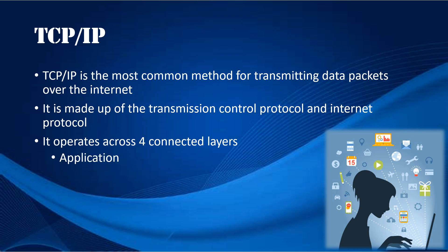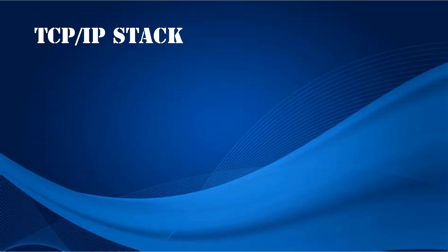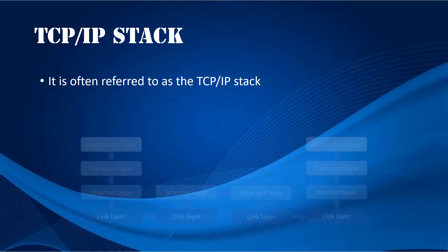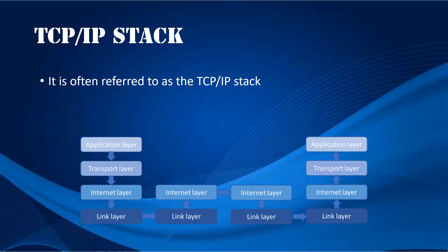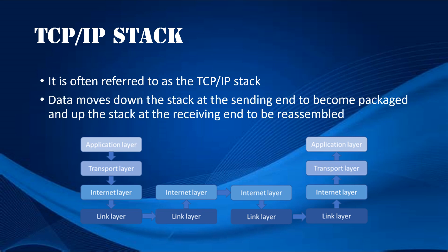The four layers are: the Application Layer, Transport Layer, Internet Layer (sometimes referred to as Network Layer), and the Link Layer. You will often hear it referred to as the TCP/IP Stack. This is because data moves down the stack at the sending end to become packaged, and up the stack at the receiving end to be unpacked and reassembled.